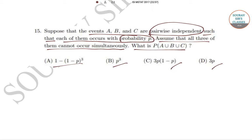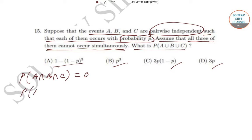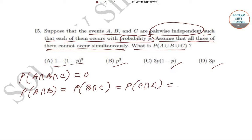Since all three events A, B, C cannot occur simultaneously, P(A ∩ B ∩ C) = 0. Since A, B, C are pairwise independent, we can write P(A ∩ B) = P(B ∩ C) = P(C ∩ A) = p · p = p².